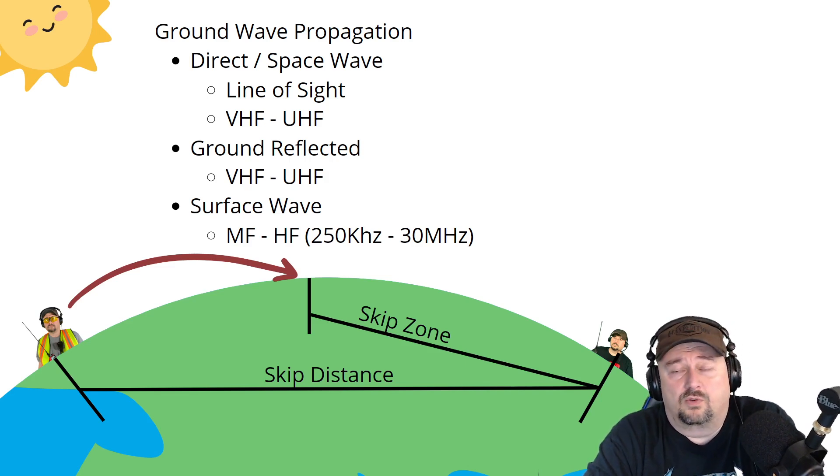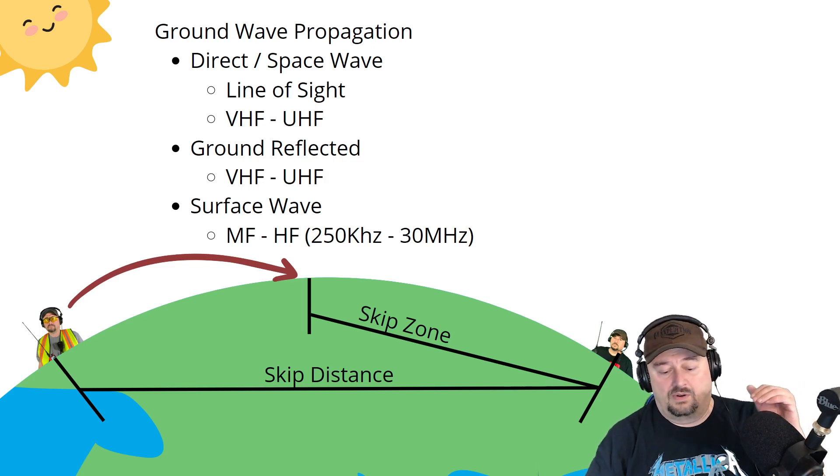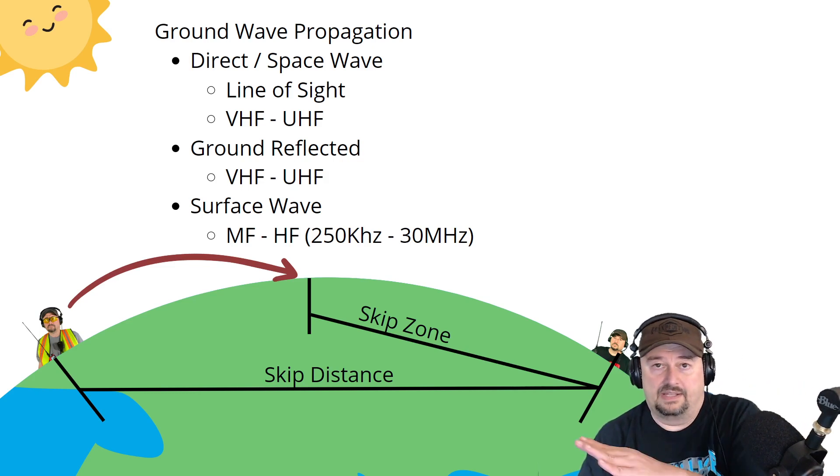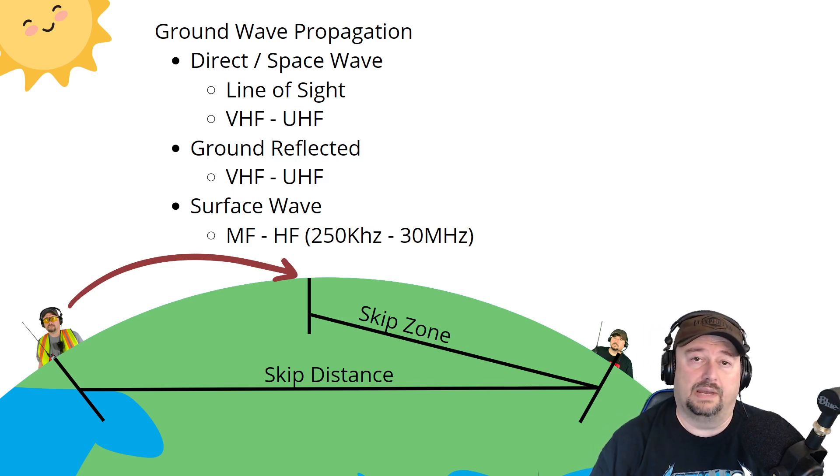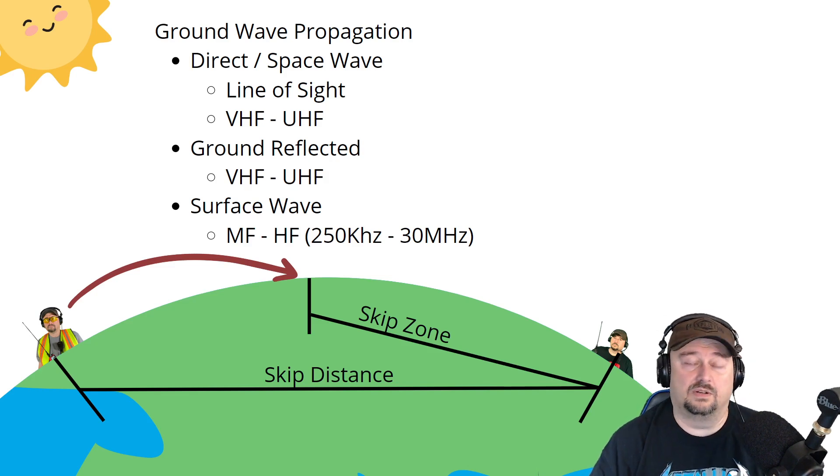The other thing is that we have something called ground reflected. And again, this is more of a UHF and VHF thing. That is, a signal can come down off of an antenna, hit the ground, and then bounce back up. But signals can also bounce around terrain or infrastructure, like buildings and hills and things on trees, things along those lines. And that's considered ground reflected.